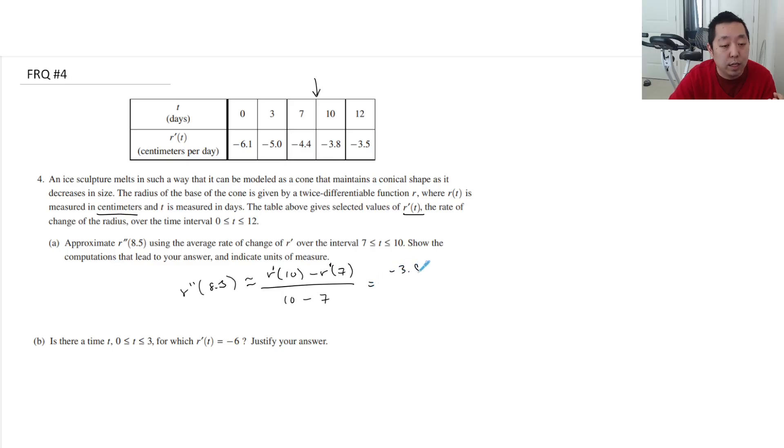So that would be -3.8 minus -4.4. They make you do this without a calculator. The top one is 0.6 over 3, so that's 0.2. And let's put it in units. It would be the derivative of this thing, so it'd be centimeters per day squared, because you're doing centimeters per day per day.